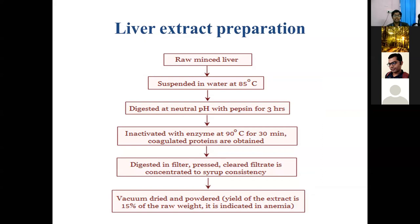For liver extract preparation, fresh liver from healthy animals is minced with a meat mincer. It is mixed in water and cooked at simmering temperature of 85 degrees Celsius. It is then digested at neutral pH with pepsin enzyme for 3 hours, followed by inactivation at 90 degrees Celsius for 30 minutes to inactivate enzymes present and coagulate proteins. The material is filter-pressed and concentrated to syrup consistency, then vacuum dried to get a powdered form of liver extract, which can be reconstituted with water. Liver extract is a very good source of vitamins and enzymes.